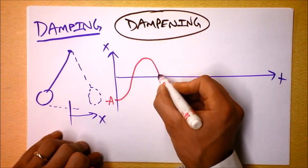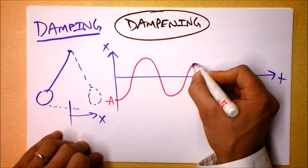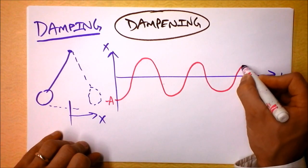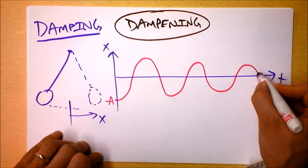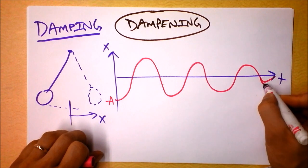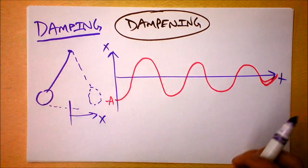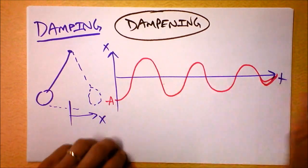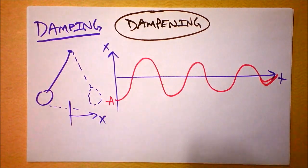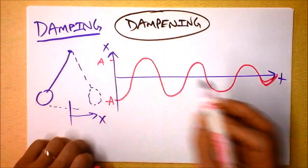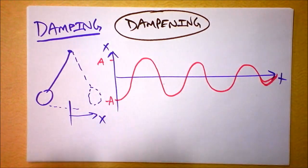Would you believe that this won't go on forever? In fact, it will gradually approach an energy of zero, or gradually approach a final amplitude of zero. We can define the initial value as amplitude A, but notice that this is gradually decreasing. That's damping.